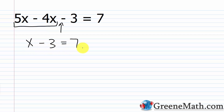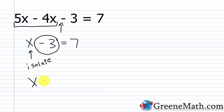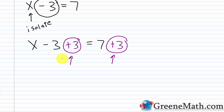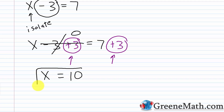Now I have x minus 3 equals 7. I want to isolate the variable — I'm subtracting away 3, or adding negative 3. So to get x by itself, I add the opposite of negative 3, which is 3, to both sides: x minus 3 plus 3 equals 7 plus 3. Whatever I do to the left, I've got to match on the right. Negative 3 plus 3 is 0, so that's gone, leaving just x. And 7 plus 3 is 10. So x equals 10.